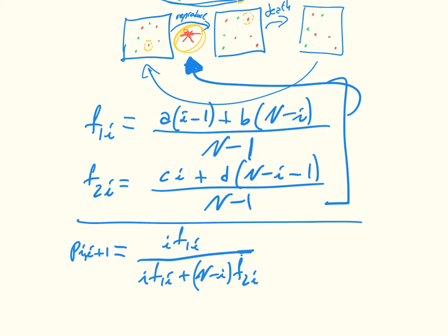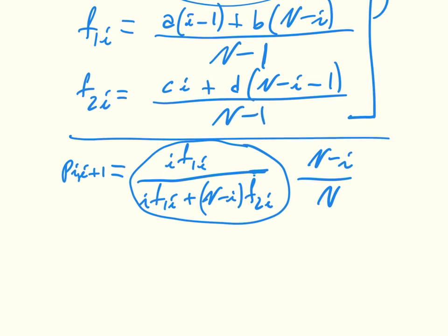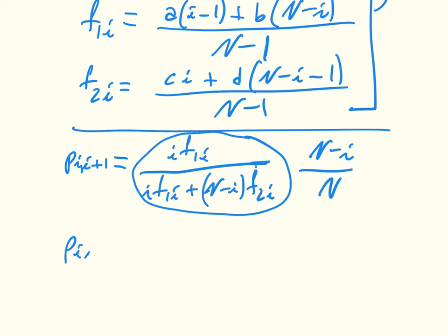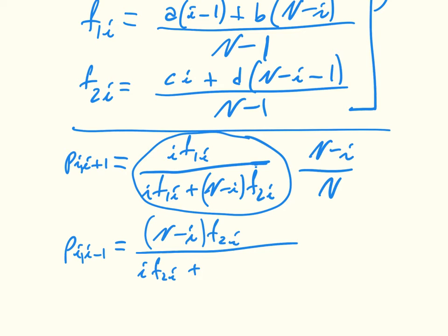The death step is a completely uniform chance. We need to select an individual of the first type for birth — that's the reproduction term — and then select an individual of the second type for death, which is done completely uniformly: N minus I divided by N. The probability of going down, P(i, i−1), is similarly N minus I times F2I divided by I·F1I plus (N−I)·F2I, multiplied by I divided by N.